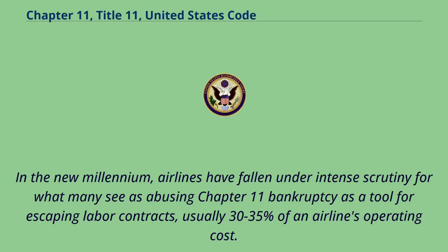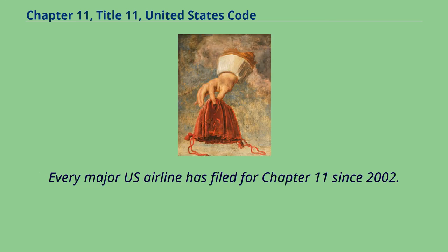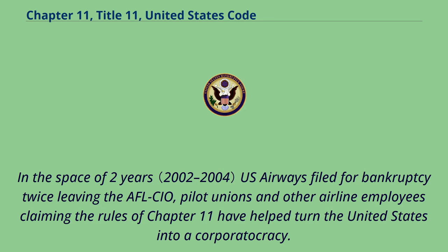In the new millennium, airlines have fallen under intense scrutiny for what many see as abusing Chapter 11 bankruptcy as a tool for escaping labor contracts, usually 30–35% of an airline's operating cost. Every major U.S. airline has filed for Chapter 11 since 2002. In the space of two years, U.S. Airways filed for bankruptcy twice, leaving the AFL-CIO, pilot unions, and other airline employees claiming the rules of Chapter 11 have helped turn the United States into a corporatocracy.